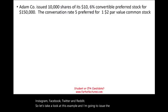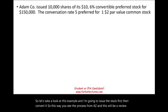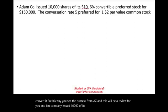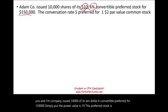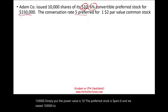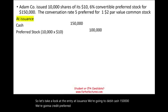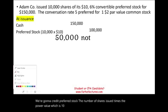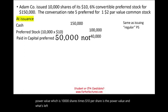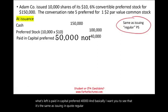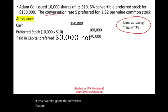Let's look at this example — I'll issue the stock first, then convert it, so you see the full process from A to Z. Adam Company issued 10,000 shares of its $10 par value, 6% convertible preferred stock for $150,000. The conversion rate is: for every five preferred shares, you receive one common share with a $2 par value. The journal entry at issuance: debit cash $150,000; credit preferred stock $100,000 (10,000 shares × $10 par); credit paid-in capital — preferred $40,000. When issuing, you ignore the conversion feature because the preferred may or may not convert.